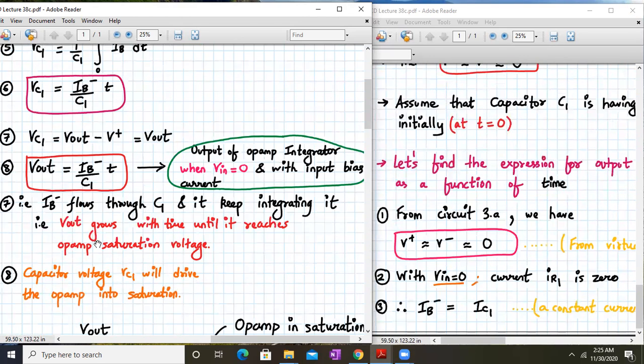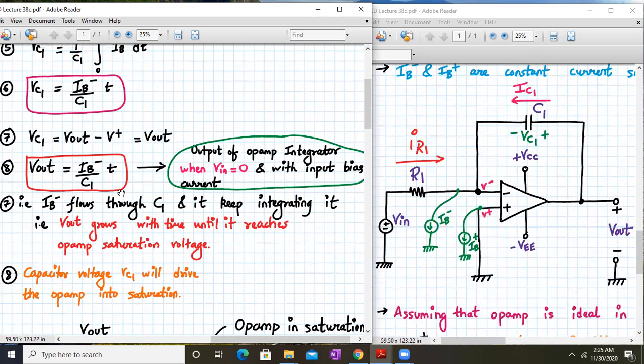iv- flows to the capacitor c1 and keeps it integrating again and again. That means the vout will grow with time until it reaches the op-amp saturation voltage. So the capacitor voltage vc1 will drive the op-amp into saturation.